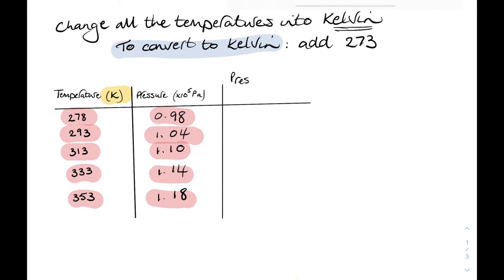Now I've added a third column here, and we're going to take our pressure values and divide them by the temperature in Kelvin. So it's P over T is our last column here.